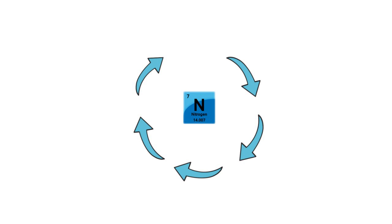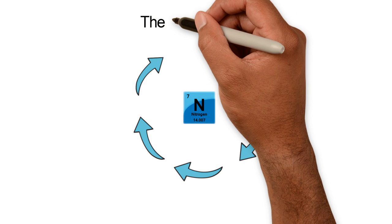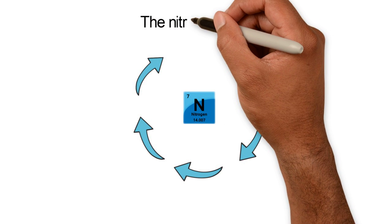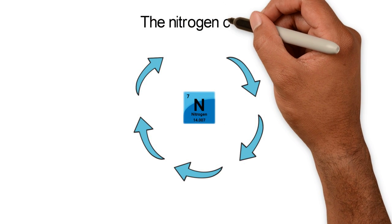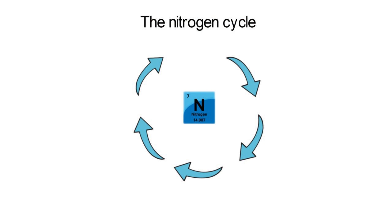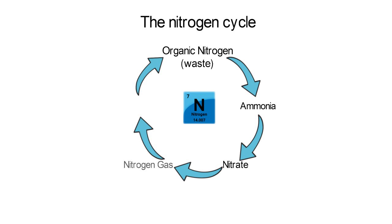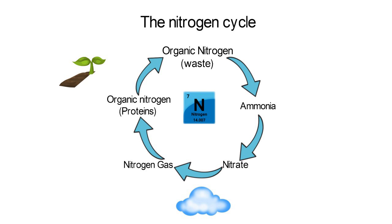Nitrogen occurs in all organisms and is as essential for life as oxygen or carbon. Nitrogen is converted into multiple chemical forms as it circles around atmospheric, terrestrial, and marine ecosystems.